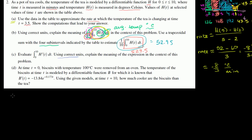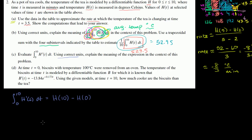If we want to evaluate this definite integral from 0 to 10 of h prime of t dt, this is just the same thing as evaluating the antiderivative of this, which is h of t evaluated at 10, and subtracting h of t evaluated at 0. This is the second fundamental theorem of calculus — exactly how we evaluate definite integrals.